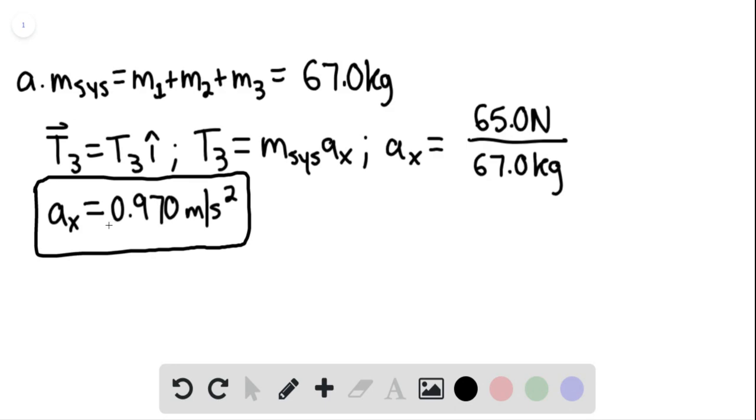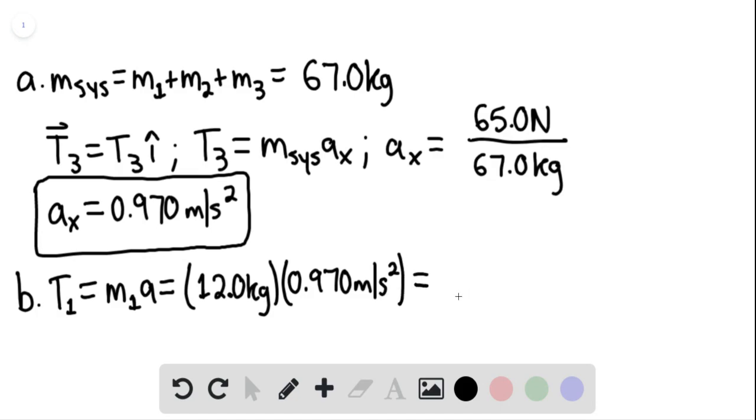And then for part B, we're going to say that T sub 1 for block 1 would be M sub 1 times the acceleration of block 1. In this case, this would be 12.0 kilograms multiplied by 0.970 meters per second squared. And this is giving us 11.6 newtons. So this would be our answer for part B.